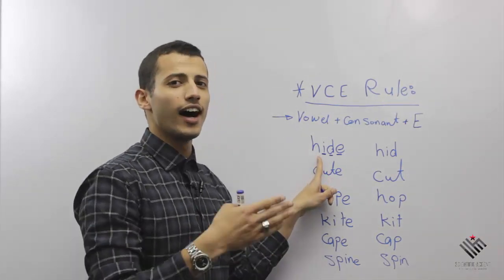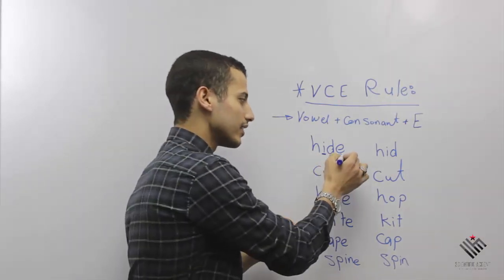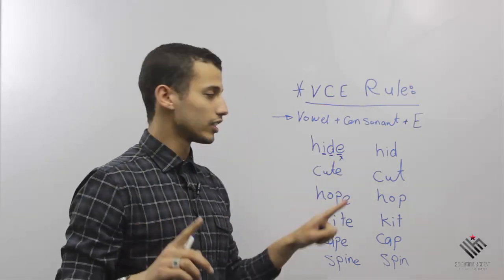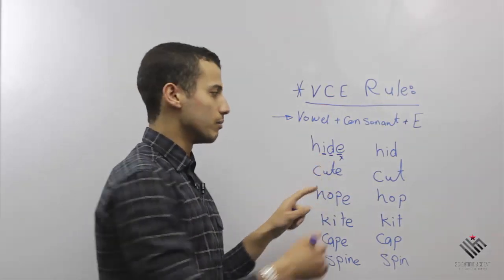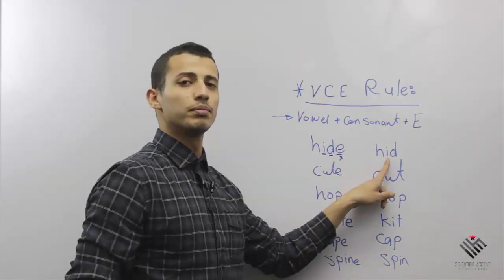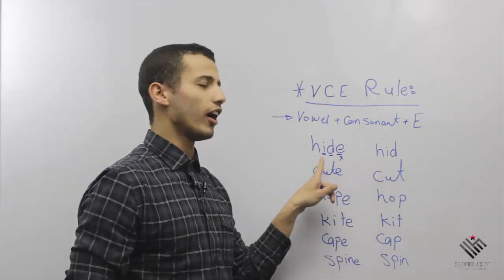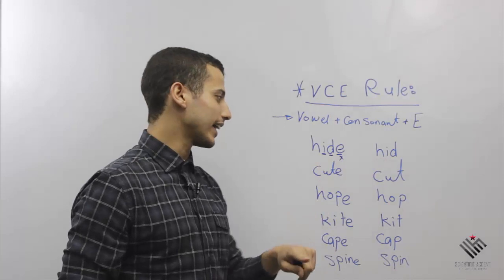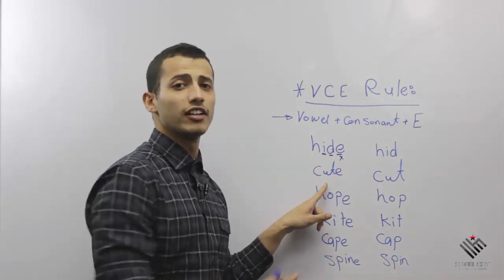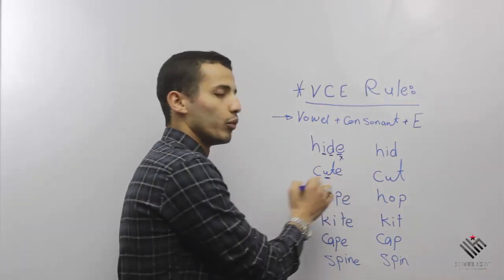So I'm going to say 'hide,' and the E is going to be silent. Got that? So this is 'hide.' Remove the E and this will be 'hid.' So hide, hid. Again, different example.